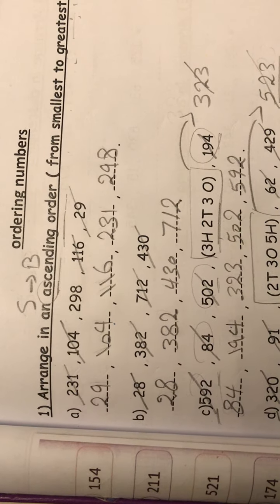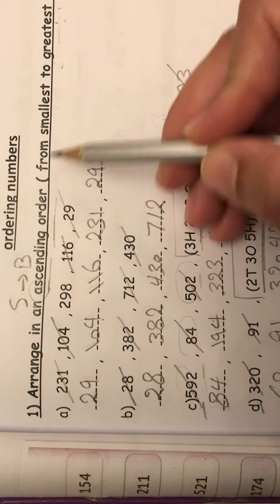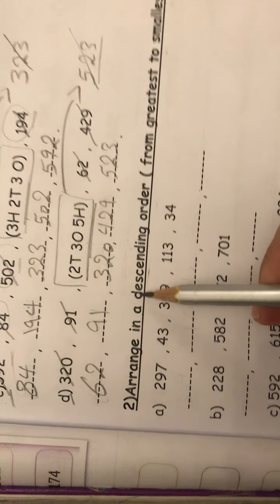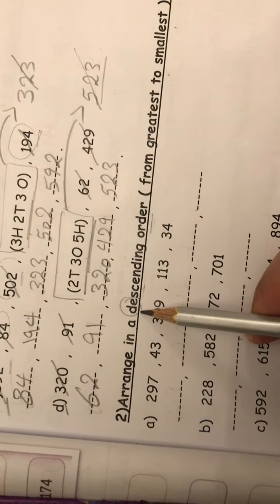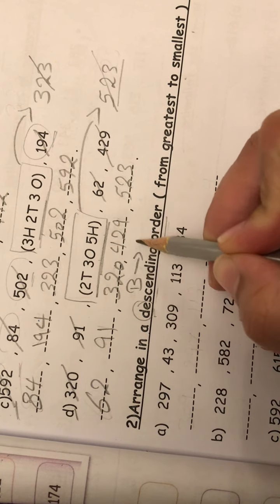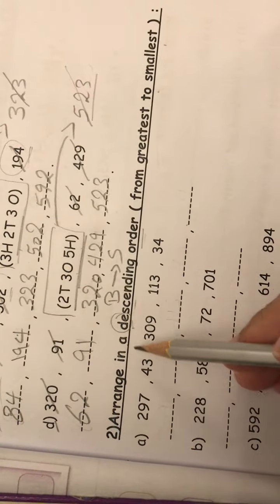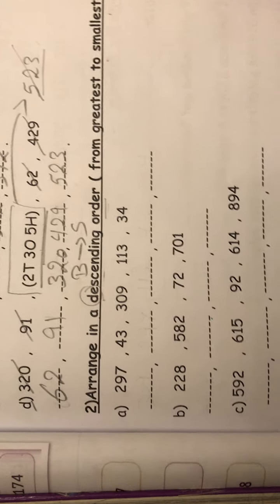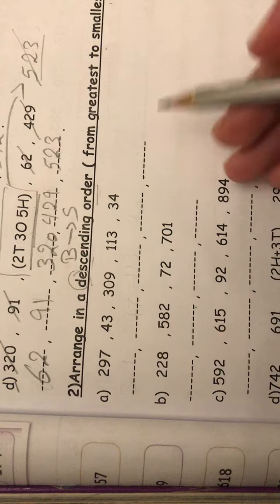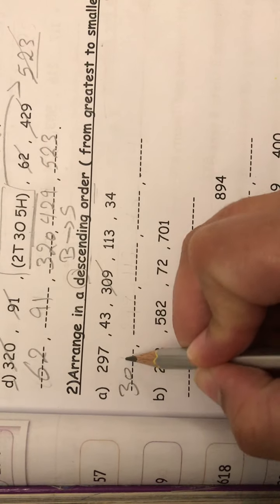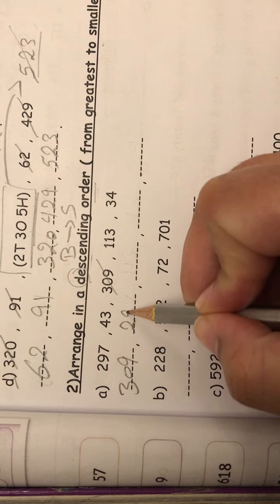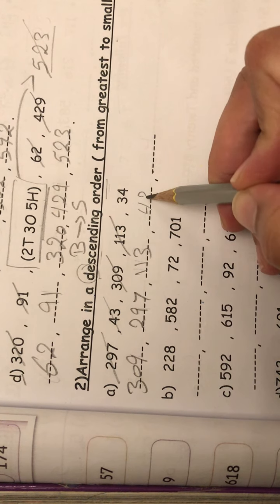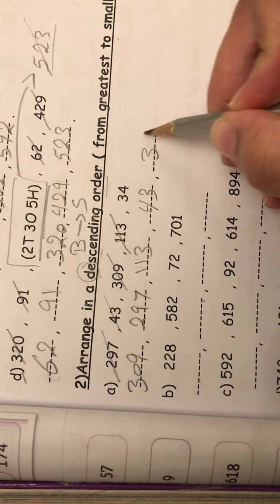This way is arranged in ascending from smallest to greatest. What if I arrange in descending order? So start with big to small. When you arrange in descending order, that's from greatest to smallest. So let's start with the greatest number. Here, it will be excellent, 309. Next, 297. And after, 113, and 43, and 34.